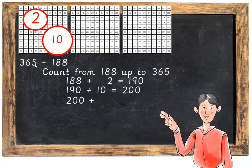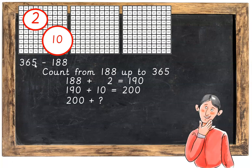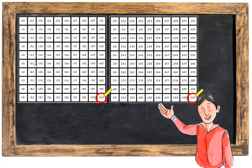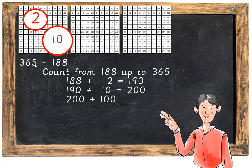200 plus the next jump, what's that going to be? Well 200 up to 300 is going to be a jump of 100. So 200 plus 100 equals 300.